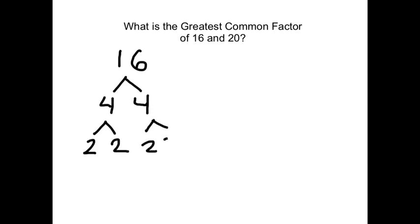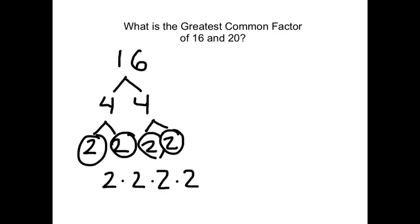This 4 is also 2 times 2, and I go about circling my prime factors. So, 16 is 2 times 2 times 2 times 2. Now, let's look at 20. 20 is 4 times 5.